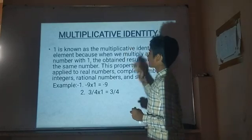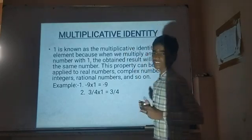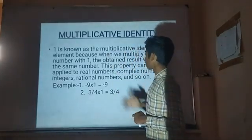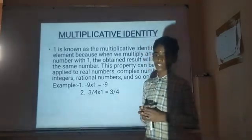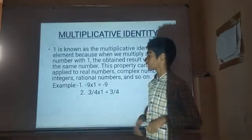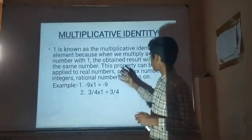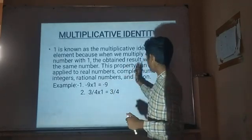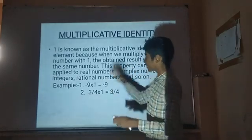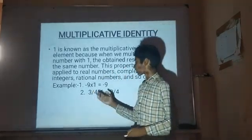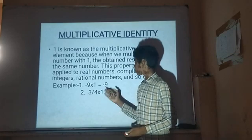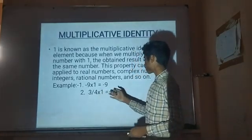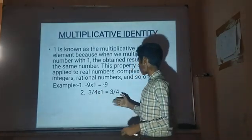Multiplicative Identity: 1 is known as the multiplicative identity element. When we multiply any number with 1, the result is the same number we are multiplying. This property applies to real numbers, complex numbers, integers, and ratio numbers. For example, minus 9 into 1 is equal to minus 9, and 3 by 4 into 1 is equal to 3 by 4.